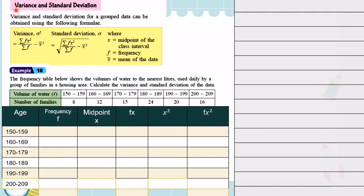Now we are going to learn about variance and standard deviation. Variance and standard deviation for a group of data can be obtained using the following formula. Variance equals sigma fx squared over sigma f, minus the square of the mean. Standard deviation — you just apply the square root to the variance. Here, x is the midpoint, f is the frequency, and the mean symbol represents the mean of the data. Let us look at example 10.